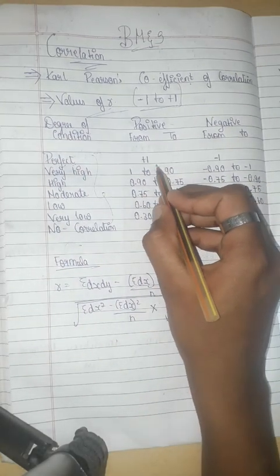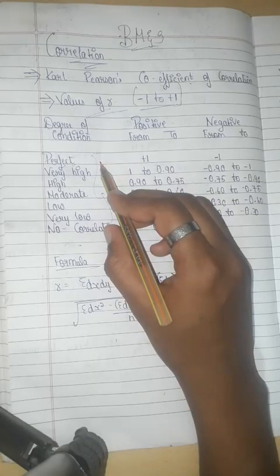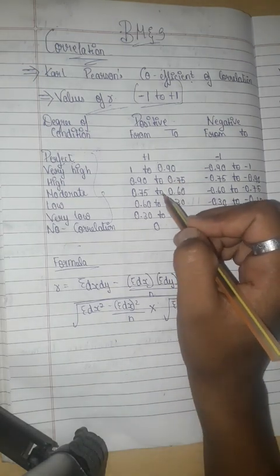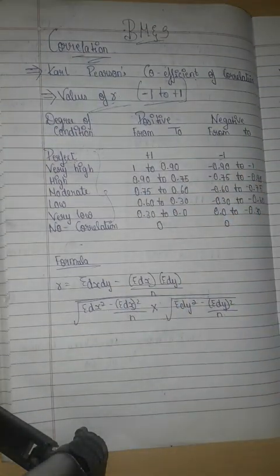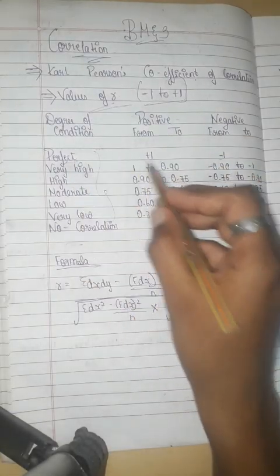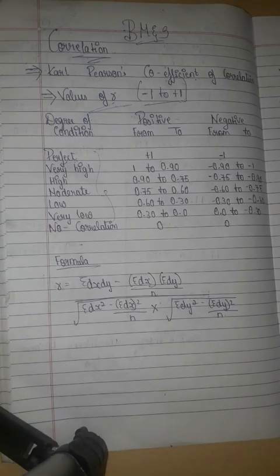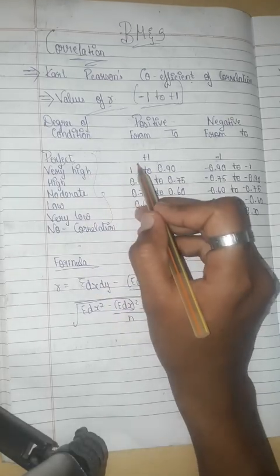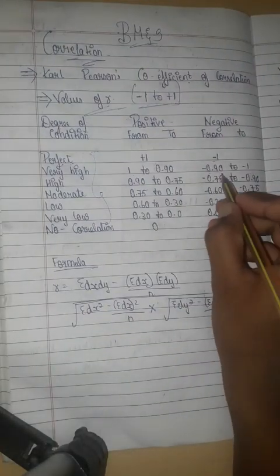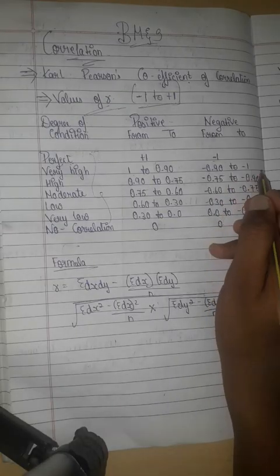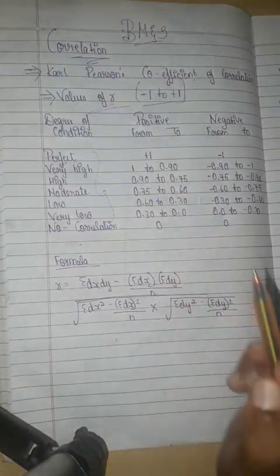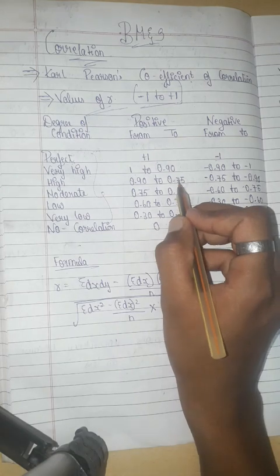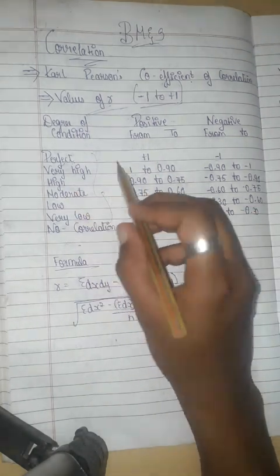Here I am going to explain the concept of the r value. The range minus 0.90 to minus 1 is very high negative correlation. The range 0.90 to 0.75 is high correlation — high positive correlation.